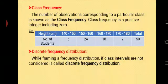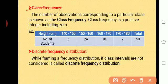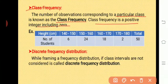The next definition is class frequency. The number of observations corresponding to a particular class is known as the class frequency. Class frequency is a positive integer including zero — that is, the class frequency may be 0, 1, 2, 3, 10, 20, 30, or any integer including zero.